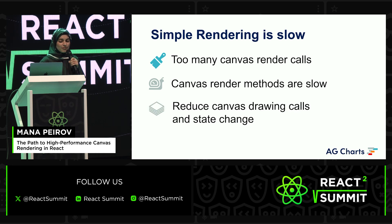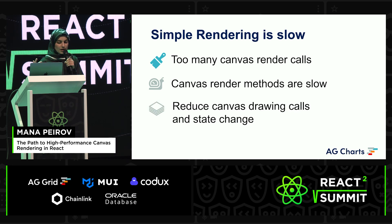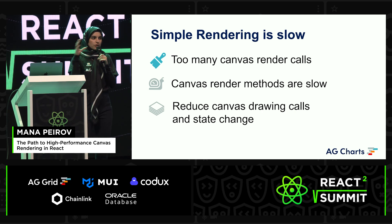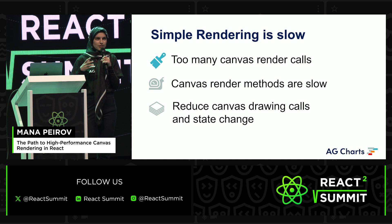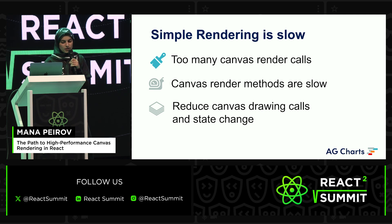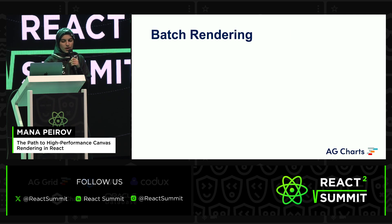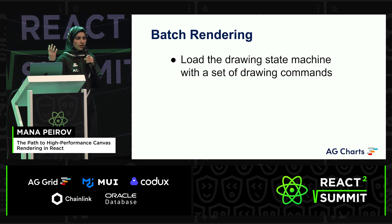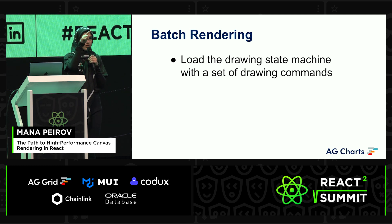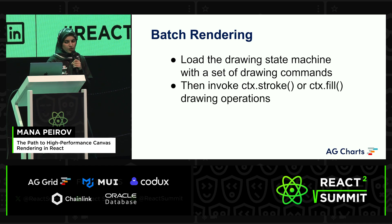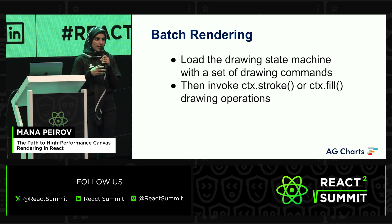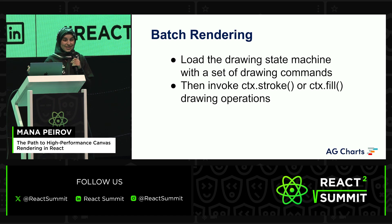We need to find a way to reduce those render calls, and one way is by doing something called batch rendering. While rendering 100,000 points, everything is the same — the circles, the fills, the size, nothing's changing. I don't need to do save and restore for each one. Instead, I can load the drawing state machine with a bunch of commands at once. Rather than individually drawing circles, I draw one path and then call fill and stroke — reducing the complexity from N (50,000 or 100,000) down to just one. I'd expect that would significantly improve performance.